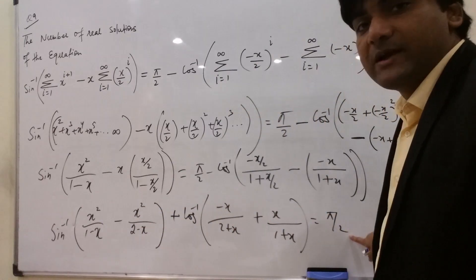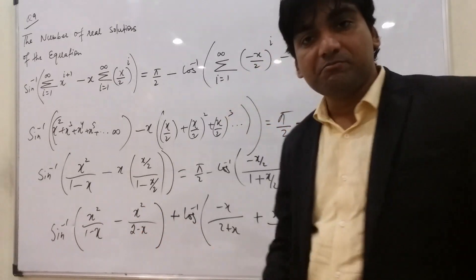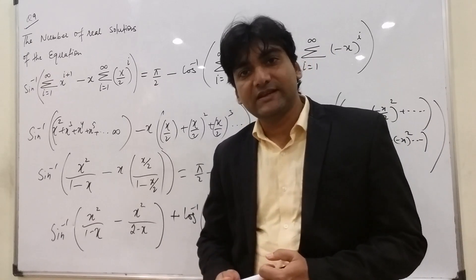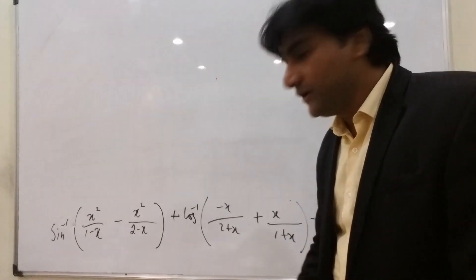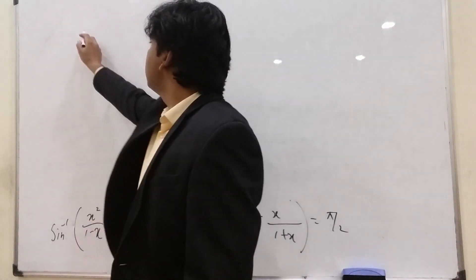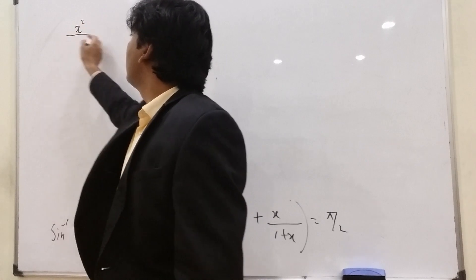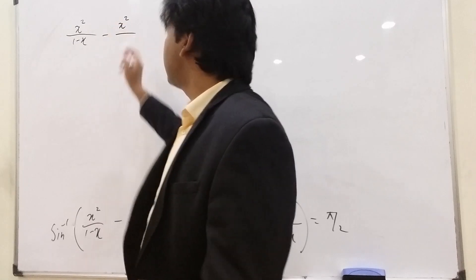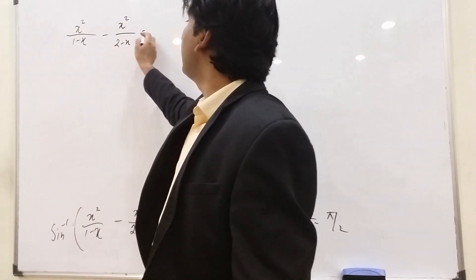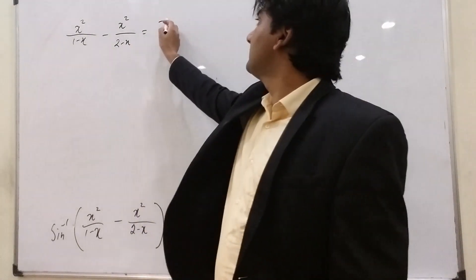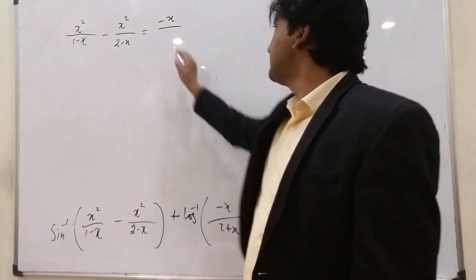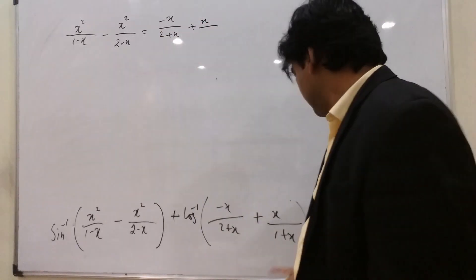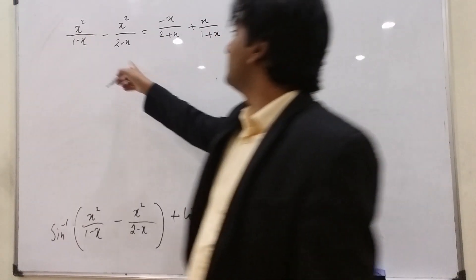Since sin⁻¹(A) + cos⁻¹(A) = π/2, these two brackets must be equal. So we equate: x²/(1−x) minus x²/(2−x) equals −x/(2+x) plus x/(1+x).